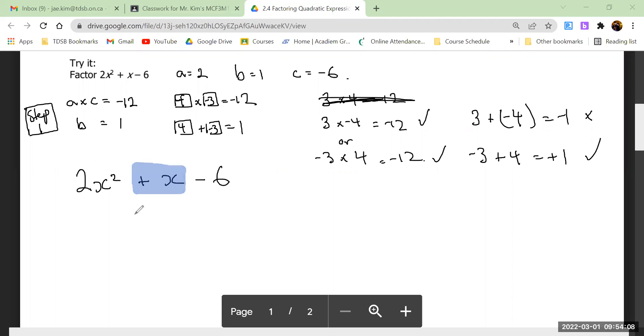Step two is what we call decomposition. Look carefully at my term here. You see that's a plus one? Well I am going to rewrite this as 2x² + 4x - 3x - 6. Does the top line equal the bottom line mathematically?